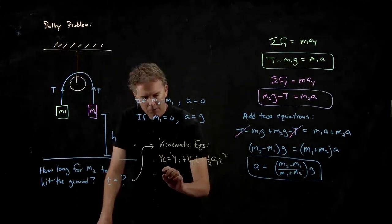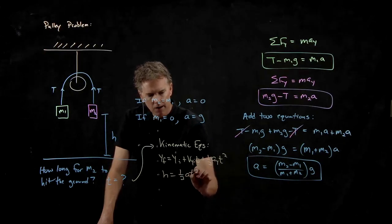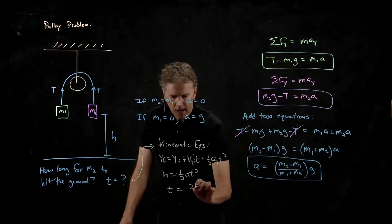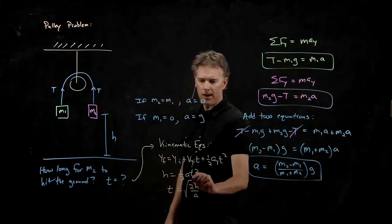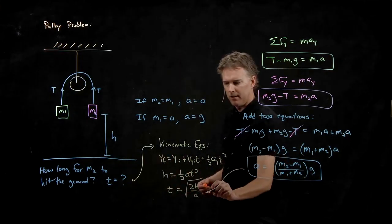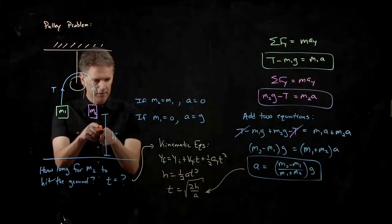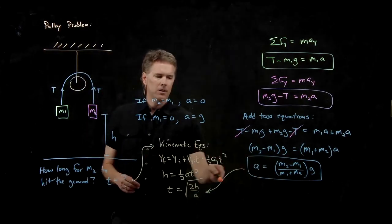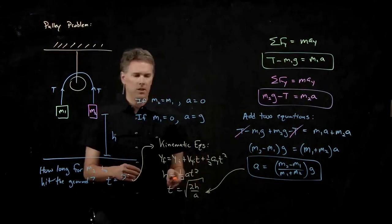What does this become? It becomes H equals one half AT squared. We can solve this now for T. T is square root of two H over A. And this is A. So now if you had the masses, you had the height, you can calculate A. You can plug it into here and you can calculate exactly how long it takes to hit the ground.